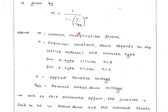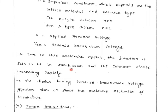In the formula, M is the carrier multiplication factor, V is the applied reverse voltage, V_BD is the reverse breakdown voltage, and n is an empirical constant which depends on material and carrier type. For n-type silicon, n = 4; for p-type silicon, n = 2. Due to this avalanche effect, the junction is said to be in breakdown and the current starts increasing rapidly. Diodes with reverse breakdown voltage greater than 6 volts show this avalanche mechanism of breakdown.